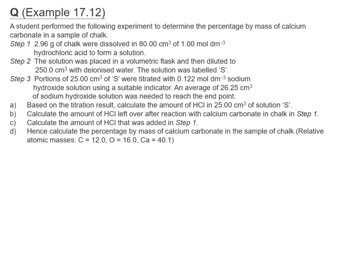Question A: based on the titration result, calculate the amount of acid in 25.00 cm³ of solution S. Write down the equation first: HCl plus NaOH. Step 3 is the reaction between sodium hydroxide and HCl. Write down the information of the reactants — the acid concentration is unknown with volume 25.00 cm³, and sodium hydroxide is 26.25 cm³ at a concentration of 0.122M.